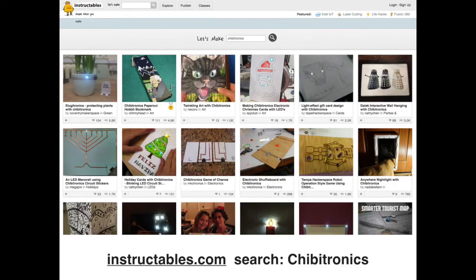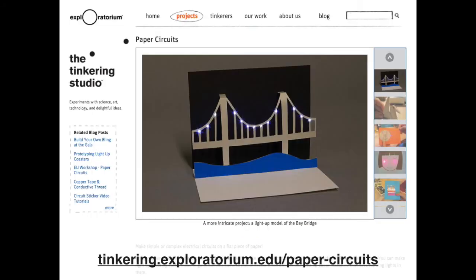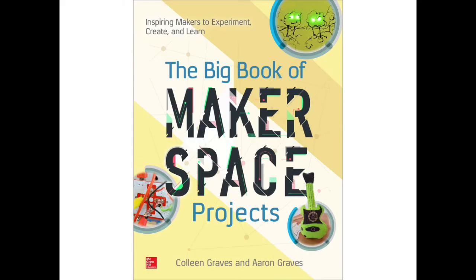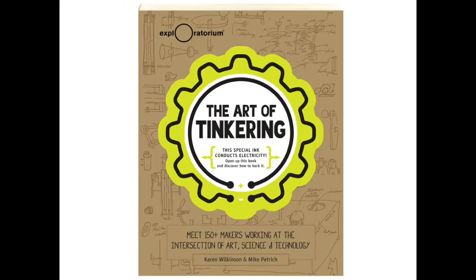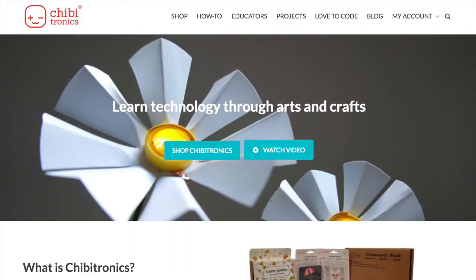There are also tons of other great paper circuit resources out on the web. For example, you can go to instructables.com and search chibitronics. The Tinkering Studio at the Exploratorium has a great page on paper circuits. Colleen Graves, who is a rockstar librarian, wrote a wonderful book called The Big Book of Makerspace Projects that has tons of good paper circuitry. The Art of Tinkering is one of my favorite books for getting inspiration. For links to these and more, such as great places to order supplies, check out the handout that came with this conference.